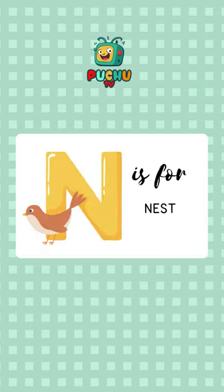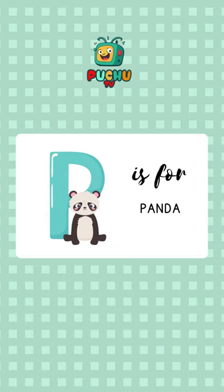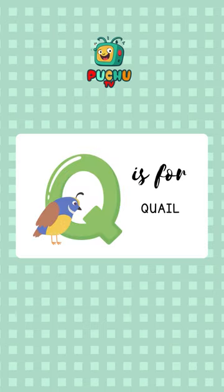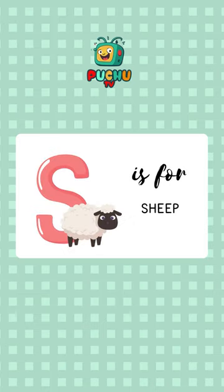N is for nest, O is for owl, P is for panda, Q is for quail, R is for rabbit, S is for sheep.